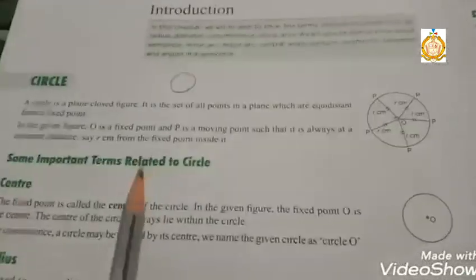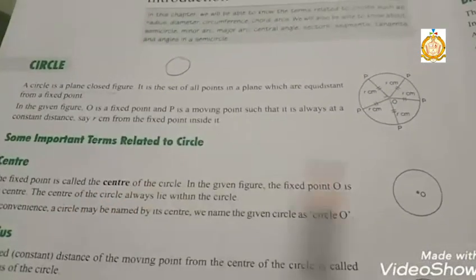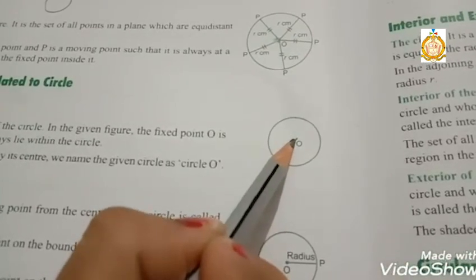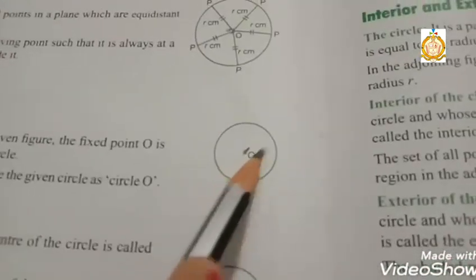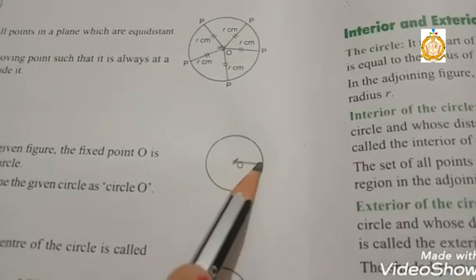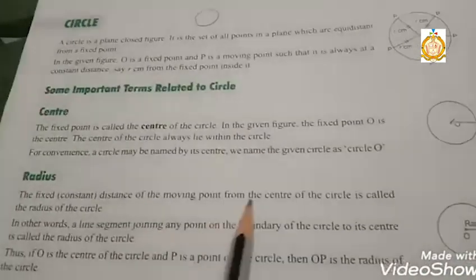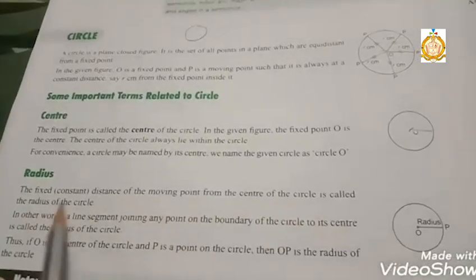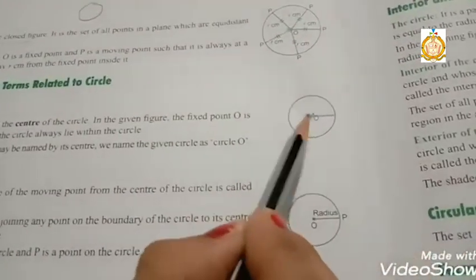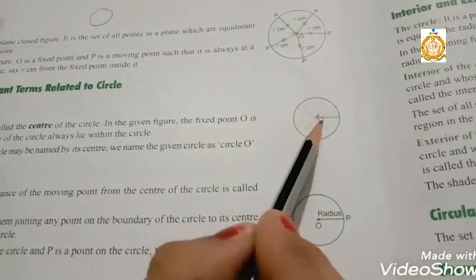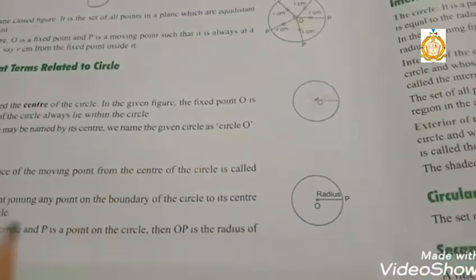Now, what is a center? The fixed point is called the center. This is a fixed point — this is called the center. And what is a radius? The fixed distance of a moving point from the center of a circle is called the radius. You can draw infinite radii, and the length of the radius always remains the same.